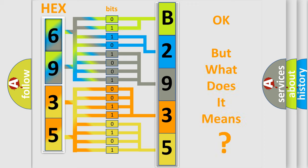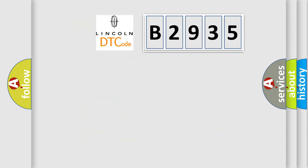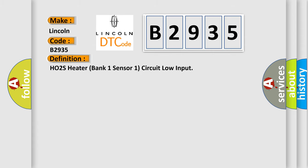We now know how the diagnostic tool translates received information into a more comprehensible format. The number itself does not make sense if we cannot assign meaning to what it actually expresses. So, what does the diagnostic trouble code B2935 interpret specifically for Lincoln car manufacturers? The basic definition is: H02S heater bank one sensor one circuit low input.